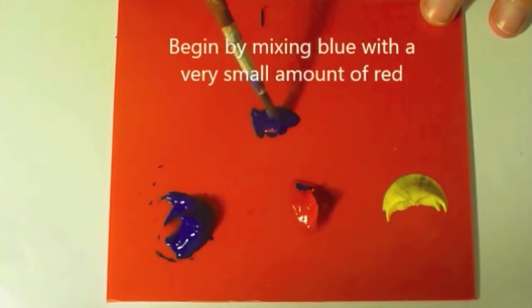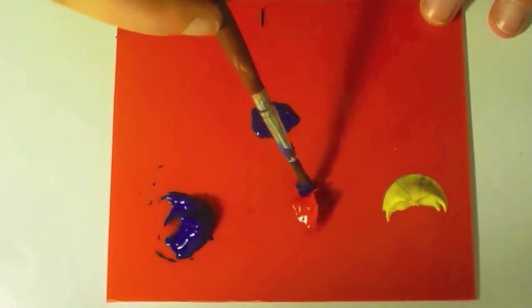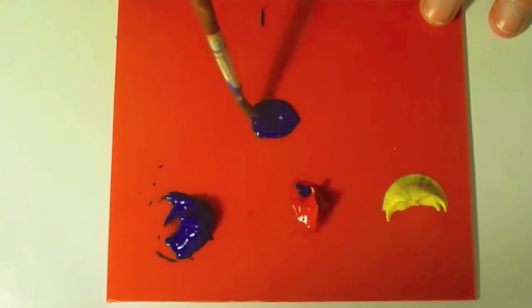He adds just a little bit of red. We really want to pay attention to how much blue he has versus how much yellow he ends up adding. Remember that he has mostly blue here.